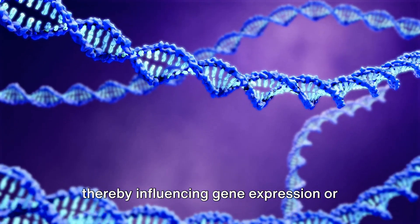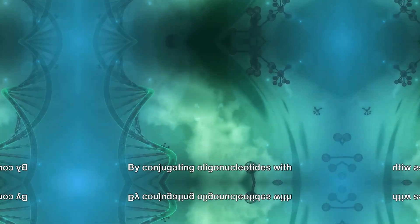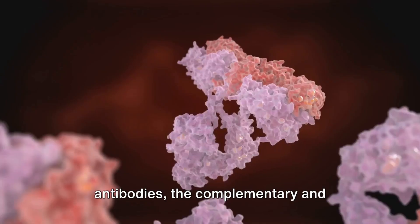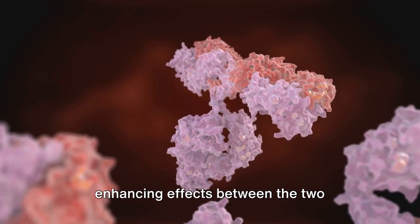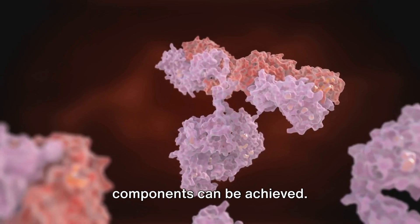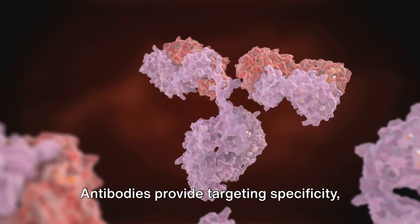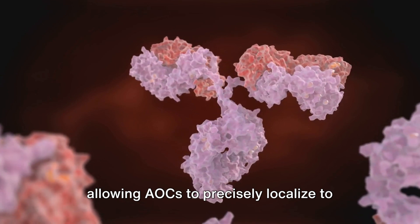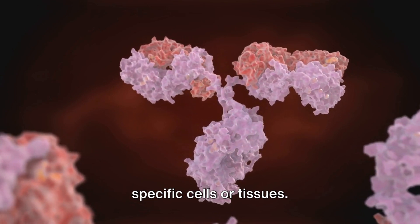By conjugating oligonucleotides with antibodies, the complementary and enhancing effects between the two components can be achieved. Antibodies provide targeting specificity, allowing AOCs to precisely localize to specific cells or tissues.